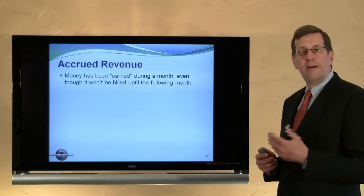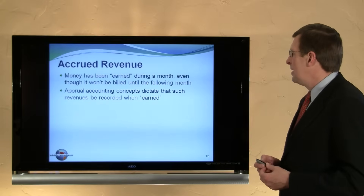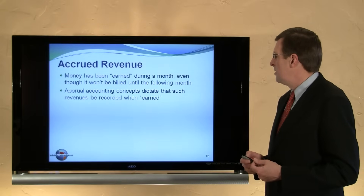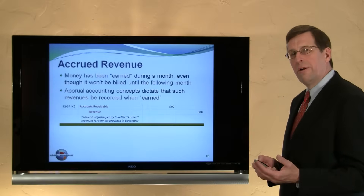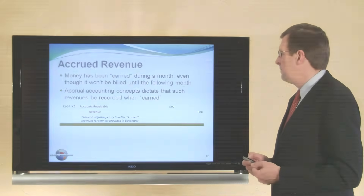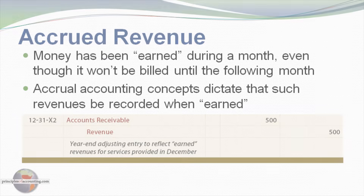Accrued revenue operates in a similar fashion. Money has been earned during a month even though it won't be billed until the following month. We need to record the revenue since it's been earned — we have the unequivocal right to receive payment. So at December 31 we accrue that revenue: debit accounts receivable, increasing the asset, and credit revenue to reflect that the earnings process is complete. Eventually when we collect those amounts, we debit cash and credit accounts receivable.